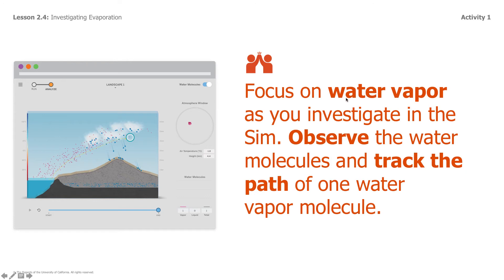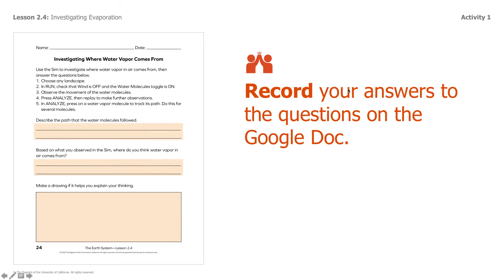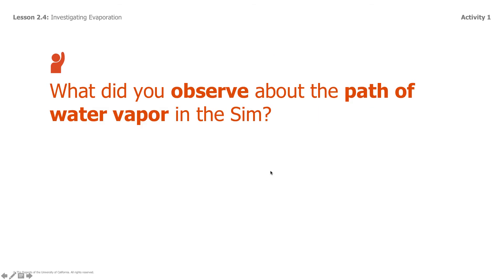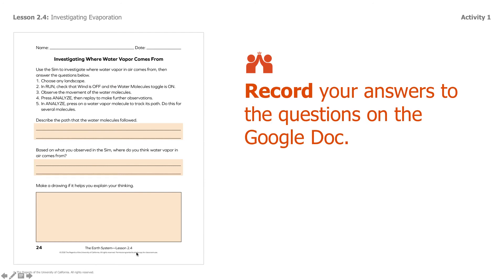Once you've done that, make sure you're focusing on water vapor as you investigate the sim. Observe the water molecules and track the path of one water vapor molecule. Then go and record your answers to the questions in the Google Doc. Pause this video for now, go ahead and do that work, and when you're done, come back and we are going to move on with the science lesson.